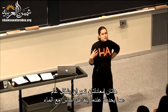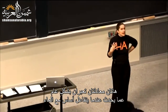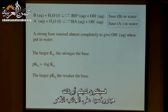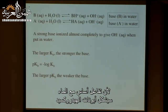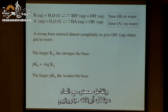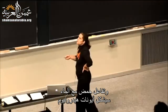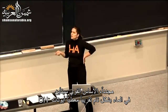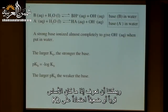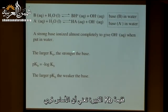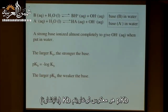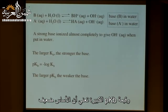Remember, when your base is in water, you should have hydroxide ions on the other side. A strong base almost completely ionizes to OH⁻ in water. The larger the Kb, the stronger the base. There is also a term pKb, which is minus log of Kb. The larger the pKb, the weaker the base. However, pKb is not used very much — most things are converted to a pKa. You'll see pKa's quite a bit in organic chemistry, biochemistry, and biology.